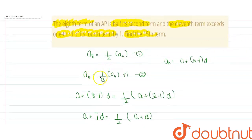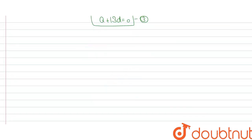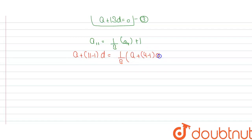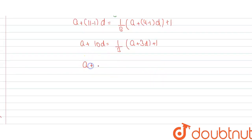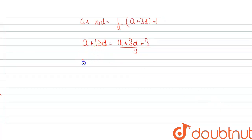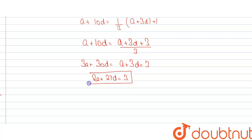The second equation is a11 = one third of a4 plus 1. So a plus 10d equals one third of (a + 3d) plus 1. Solving, a plus 10d equals (a + 3d + 3) divided by 3. Multiplying through by 3 gives 3a + 30d = a + 3d + 3, which simplifies to 2a + 27d = 3. This is equation four.